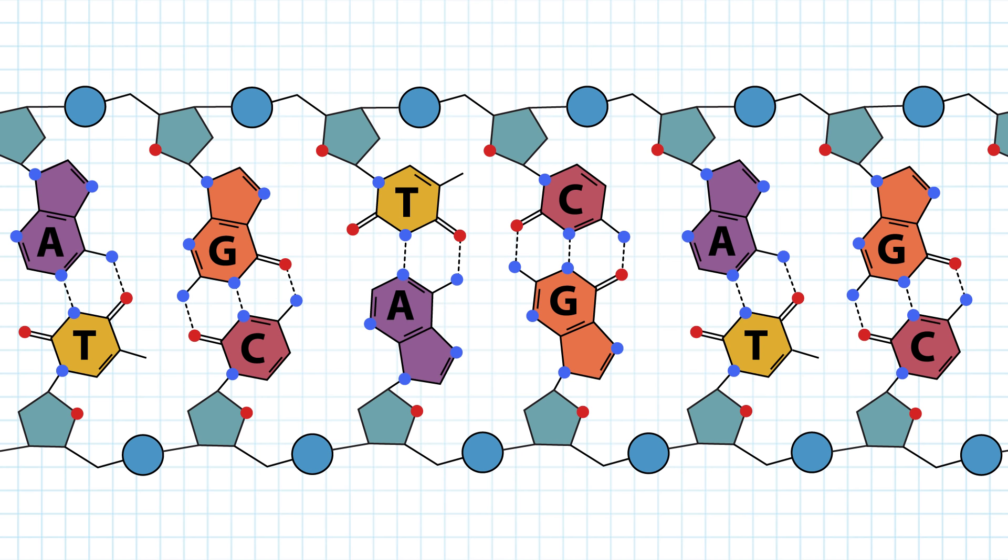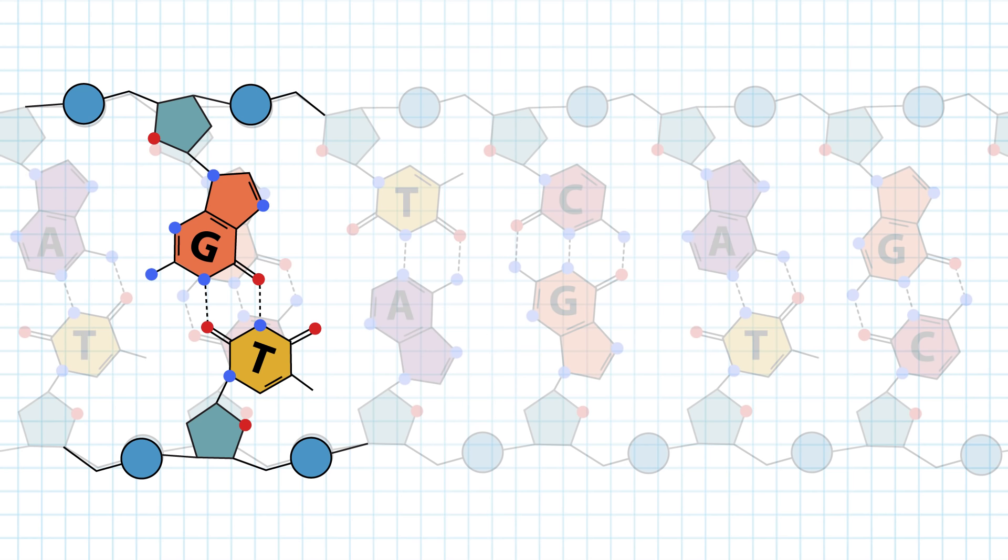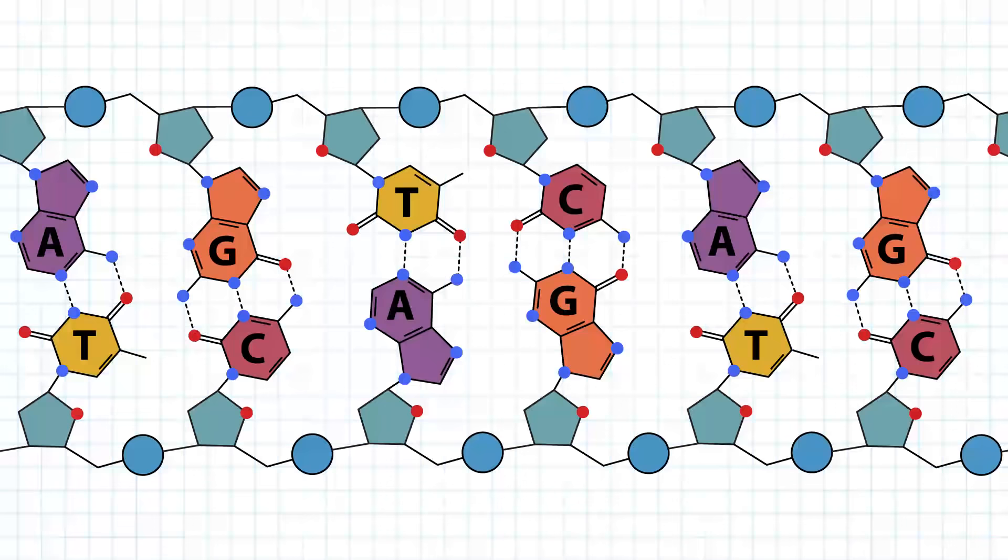This mostly has to do with the distance between the backbones and the angles to which the base is attached to the backbone. Other base pairs, like GT for example, do not have the same geometry, cannot form strong hydrogen bonds and disturb the helix.